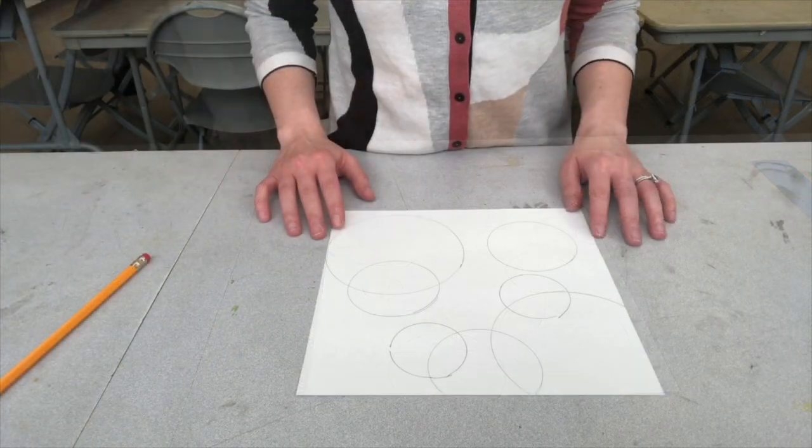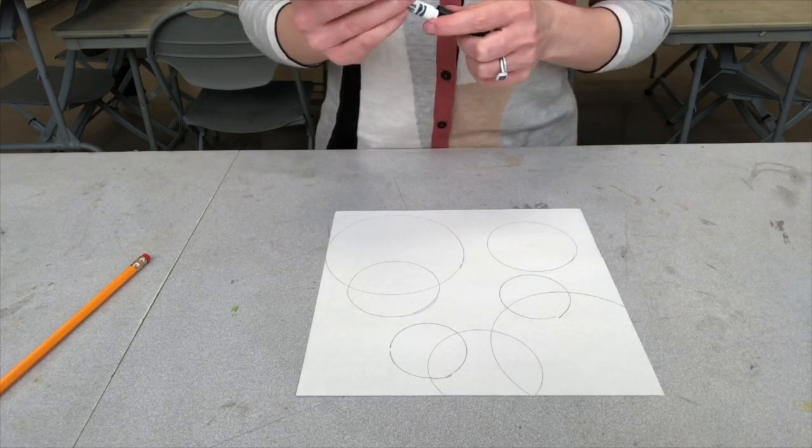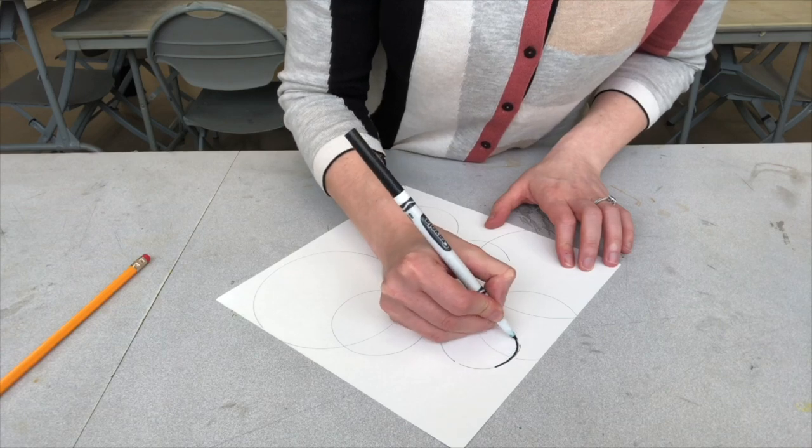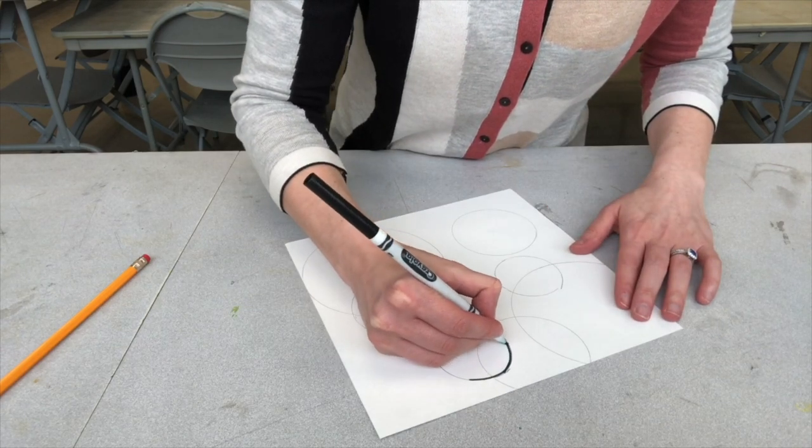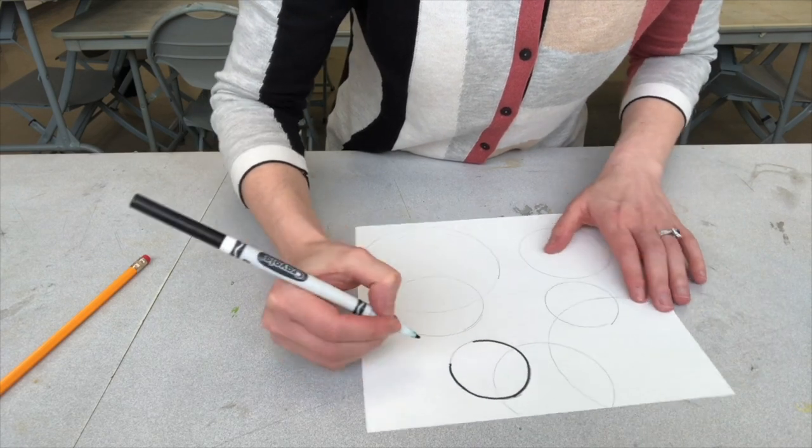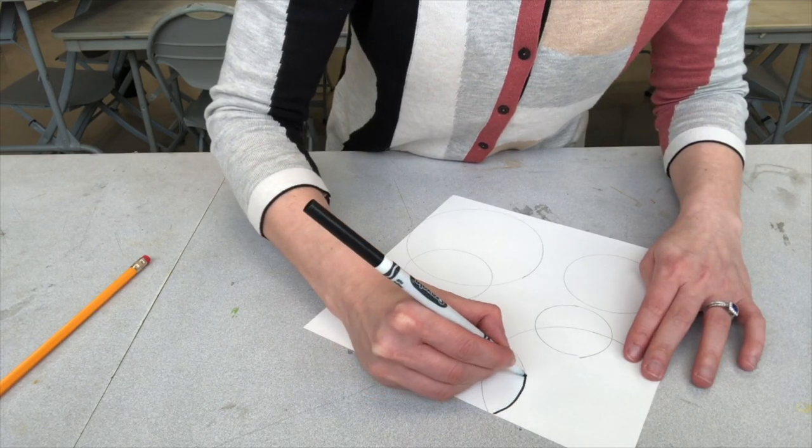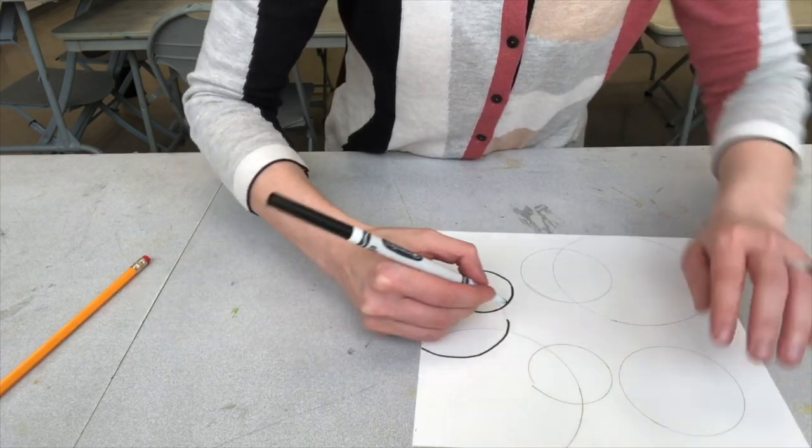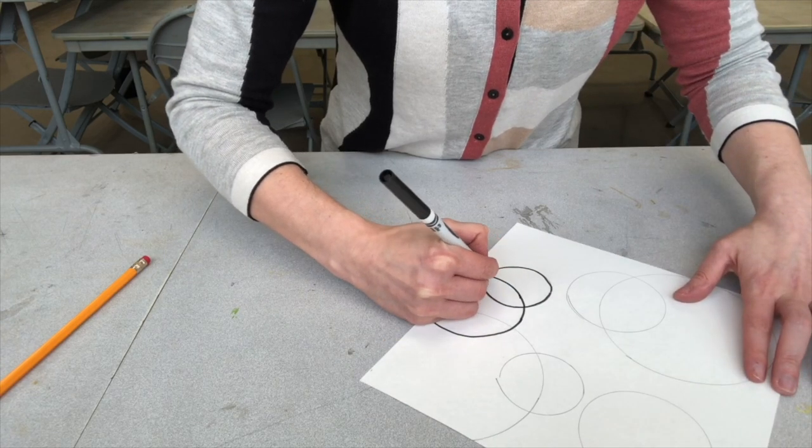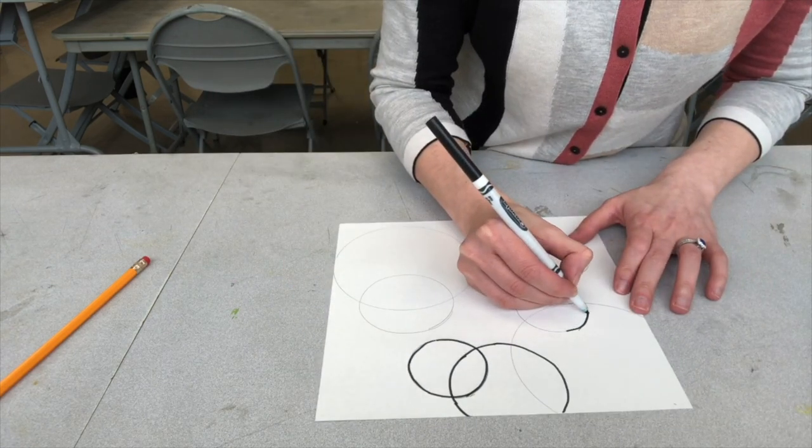And the next step is to take a black marker like this, and I'm going to trace all of the outlines of my circles. So if you don't have a marker, again, you could do this with crayons or with colored pencils. And you don't have to outline in black. You could outline in a different color, but I would make all of your outlines the same color. That will help you see them easier once we start adding color to your drawing.